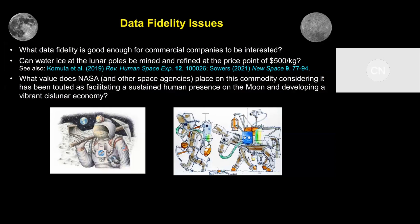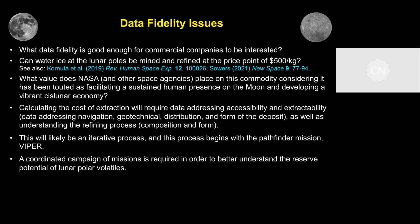We have to establish those markets just as we go out to figure out exactly what is there — it's a chicken and egg thing. Calculating the cost of extraction is going to require understanding accessibility and extractability, as well as understanding the refining process. This is going to be an iterative process, and the process begins with VIPER. A coordinated campaign of missions is required to follow on from VIPER in order to better understand the reserve potential of lunar polar volatiles. But we really do need to know the market value such that we can start getting credible business models completed.